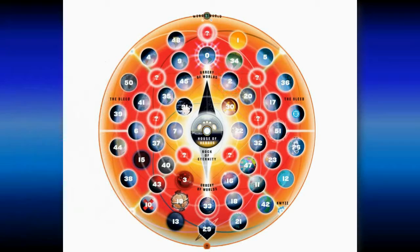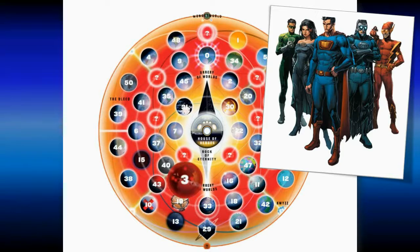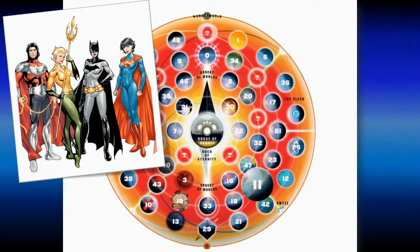Earth 3, like the one introduced during the Silver Age, houses the evil crime syndicate, complete with Ultraman, Superwoman, Owlman, Power Ring, and Johnny Quick. While Earth 11 boosts the girl power by switching the genders of the originally male-dominated DC lineup.